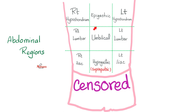Now what is this line? This is known as the subcostal line or the subcostal plane. It's a transverse line drawn at the level of the lowermost limit of the costal margin — basically your ribs.